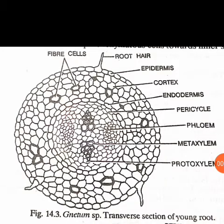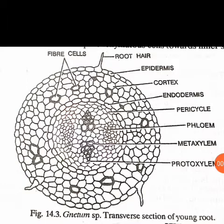We will start with the root. This is the transverse section of the root of Gnetum. Just take a look at the figure. The first outer layer is the epiblema, also referred to as the epidermis. In young root, the outermost layer is a single cell thick. You can also see the root hairs in the epiblema or epidermis.